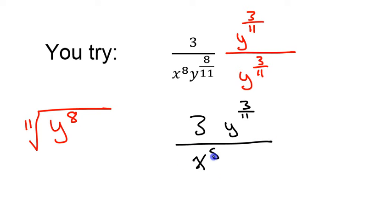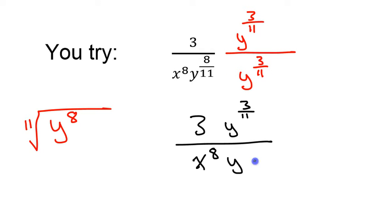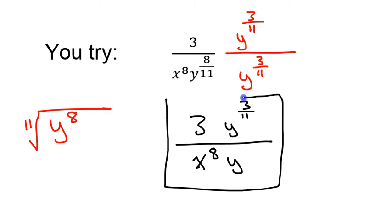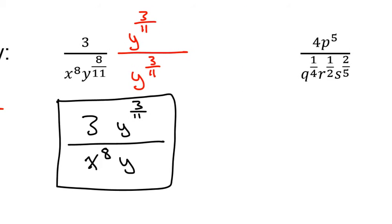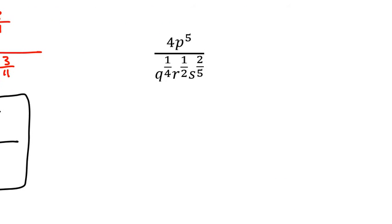So the final answer is 3y to the 3/11 power over x to the 8th power. Nothing happened to x; I did my y's — 8/11 plus 3/11 is 11/11, which is just 1, so I don't need to write it at all. That's the answer to that problem. Here's one more problem for you to try. Pause the video, try the problem by yourself, and then run the video to check your answer.